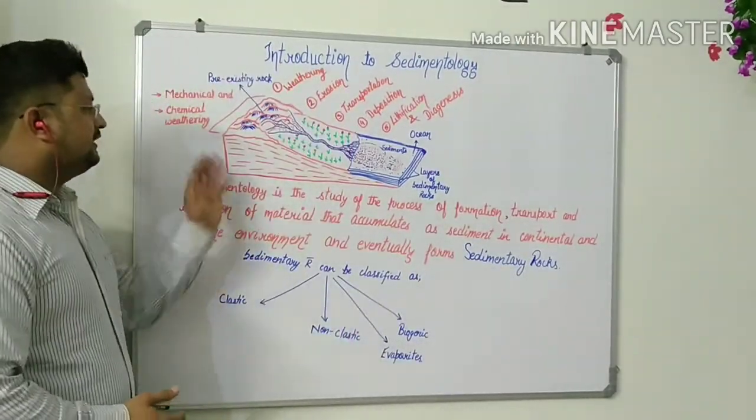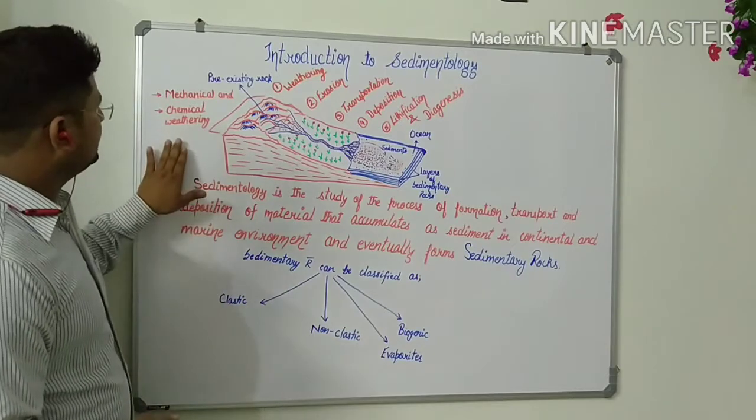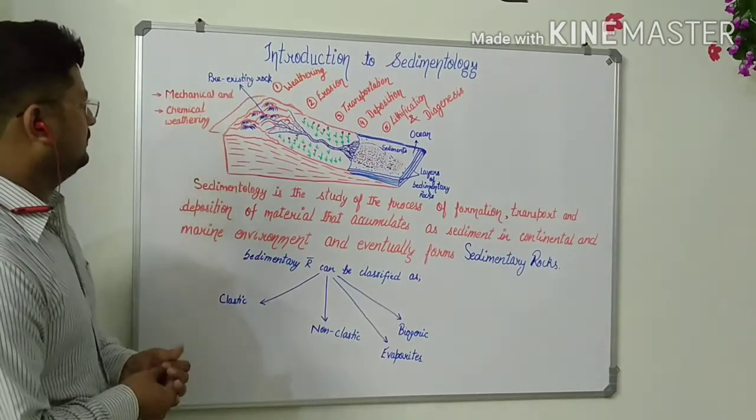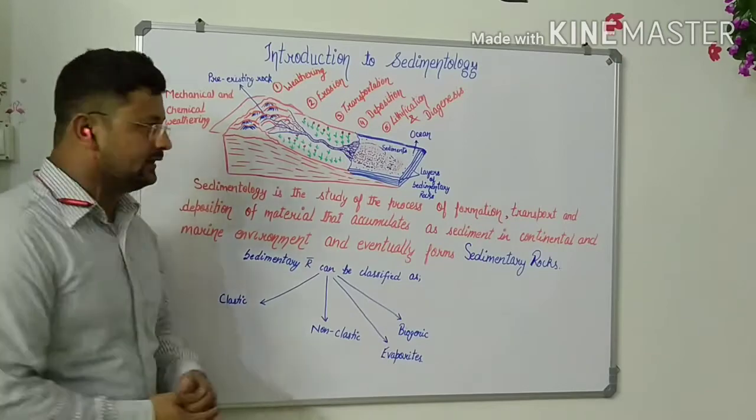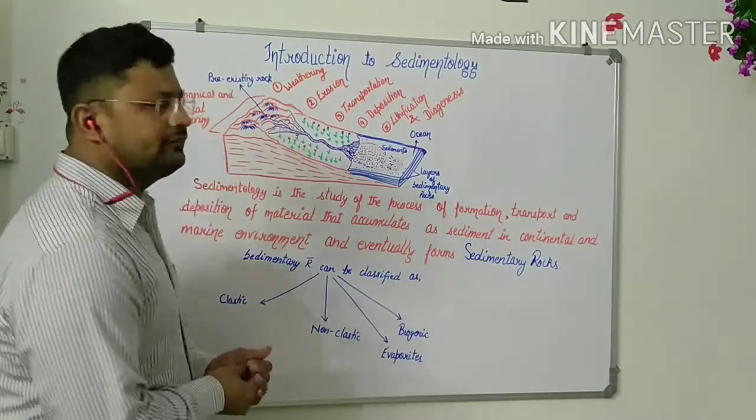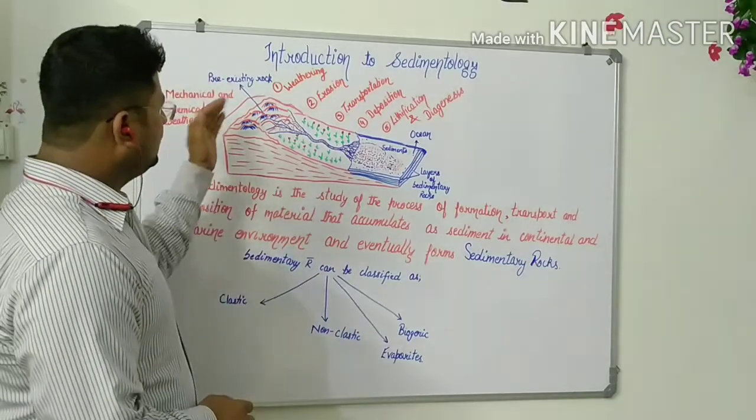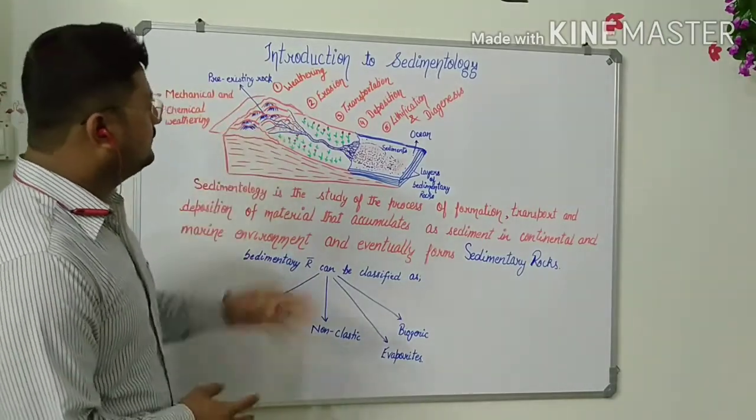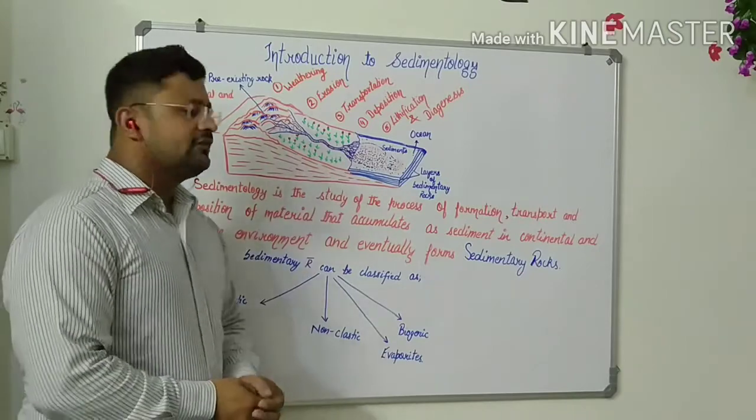Now heading to this diagram, what we can see here that the pre-existing rock already at high elevated areas, it has been worn down by the process of weathering and eroded, then transported and deposited.